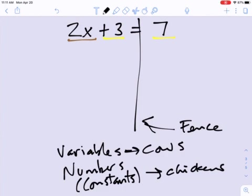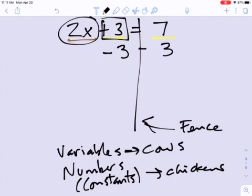I've got two x for my cows right here, and then I've got three chickens right here. So what I want to do is I want to move three chickens over the other side. So I'm gonna subtract three chickens from this side, and knowing that this is a balanced equation, I got to do the exact same thing to the other side, so I got to subtract three from there.